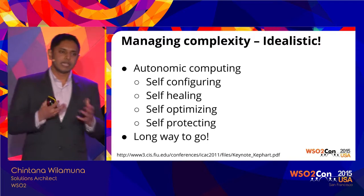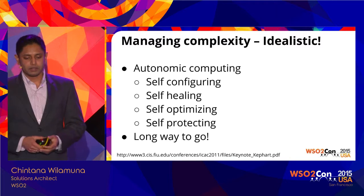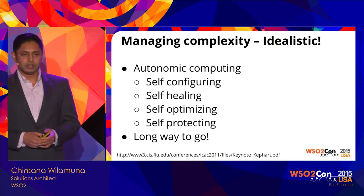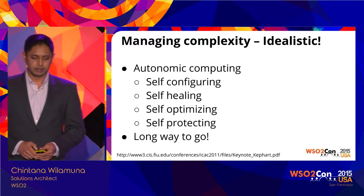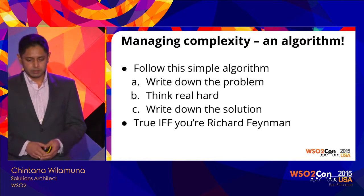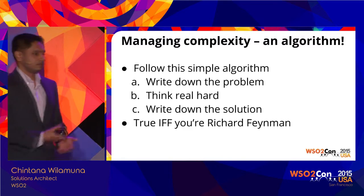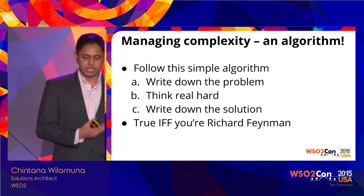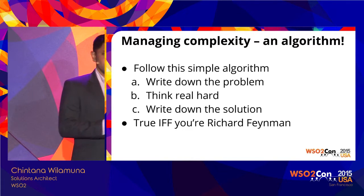In an idealistic scenario for managing complexity, IBM introduced autonomic computing — self-configuring, self-healing, self-optimizing, and self-protecting software — though we still have a long way to go. Another approach is the Feynman algorithm: write down the problem, think really hard, and write down the solution. This quote is usually attributed to Richard Feynman, who pioneered quantum computing and introduced many concepts in nanotechnology.